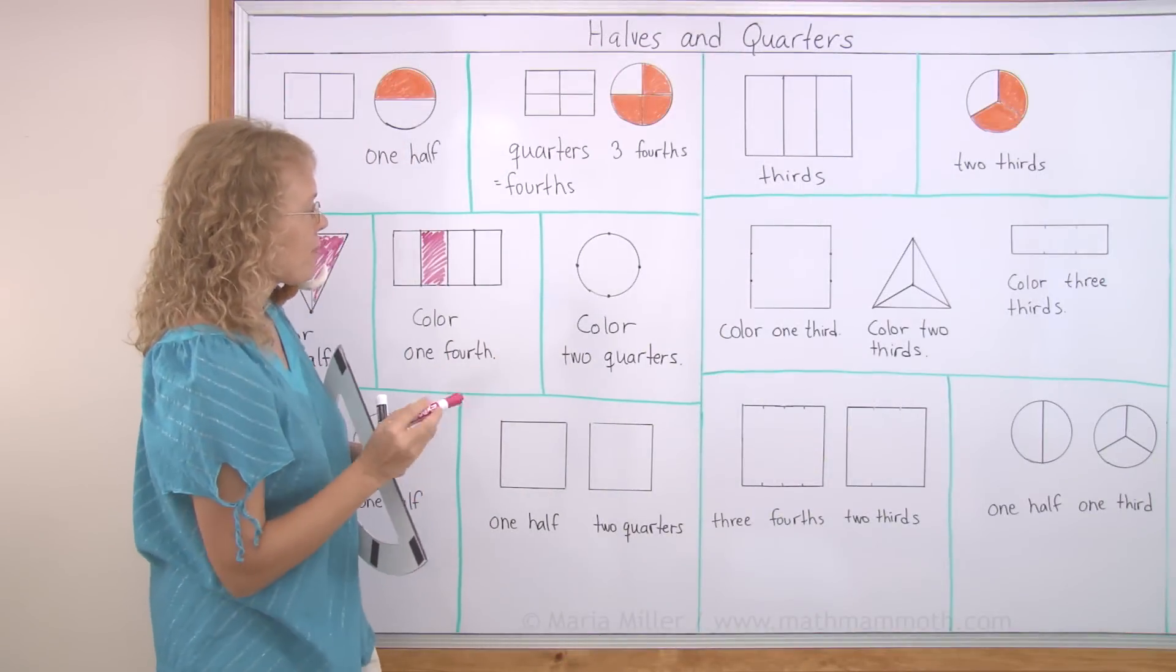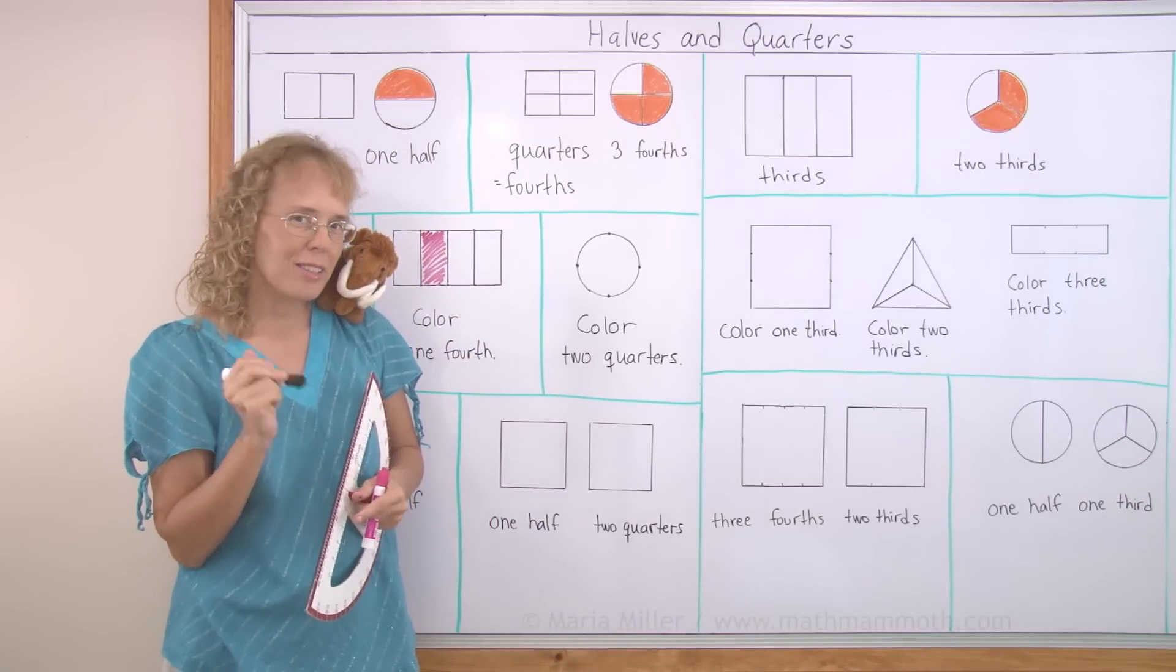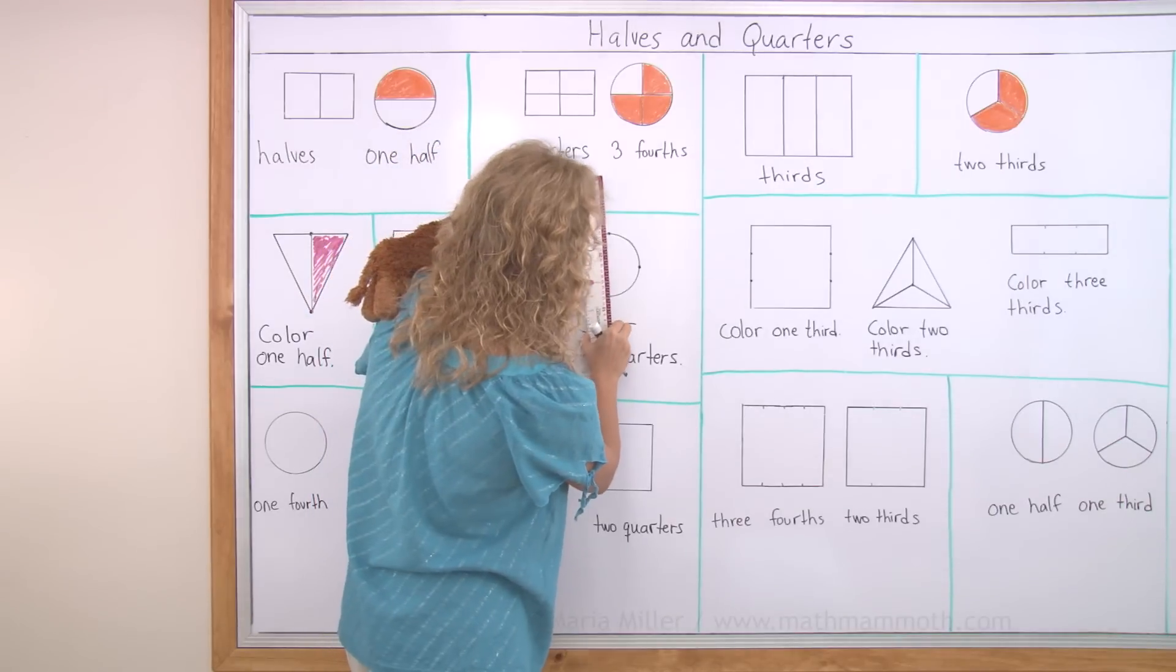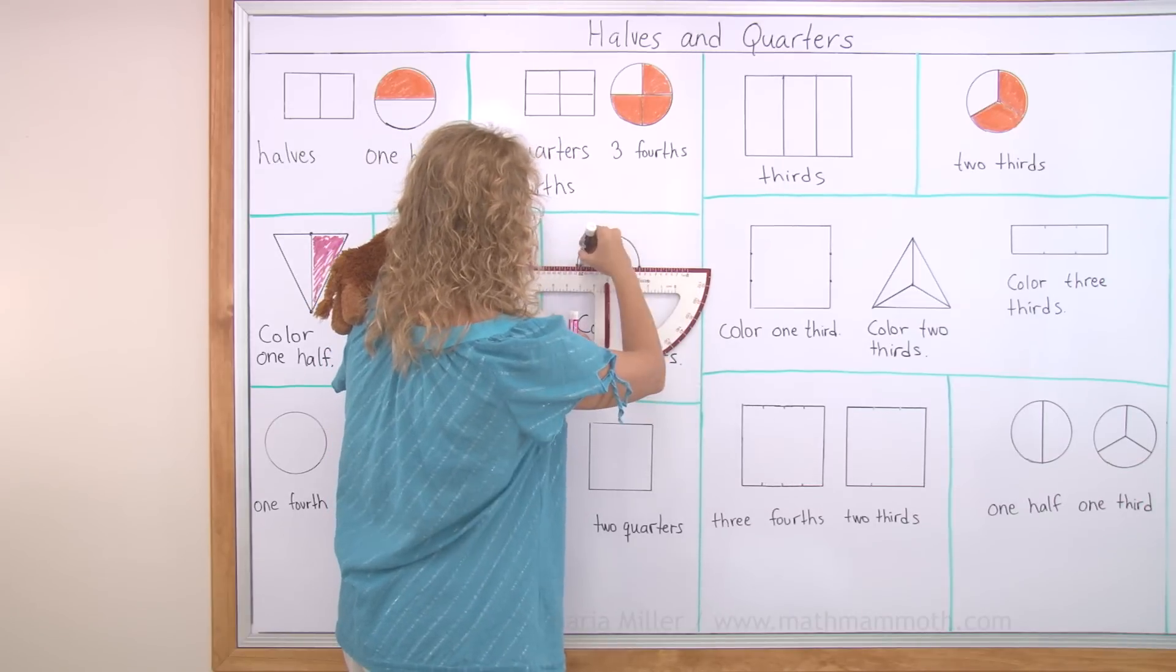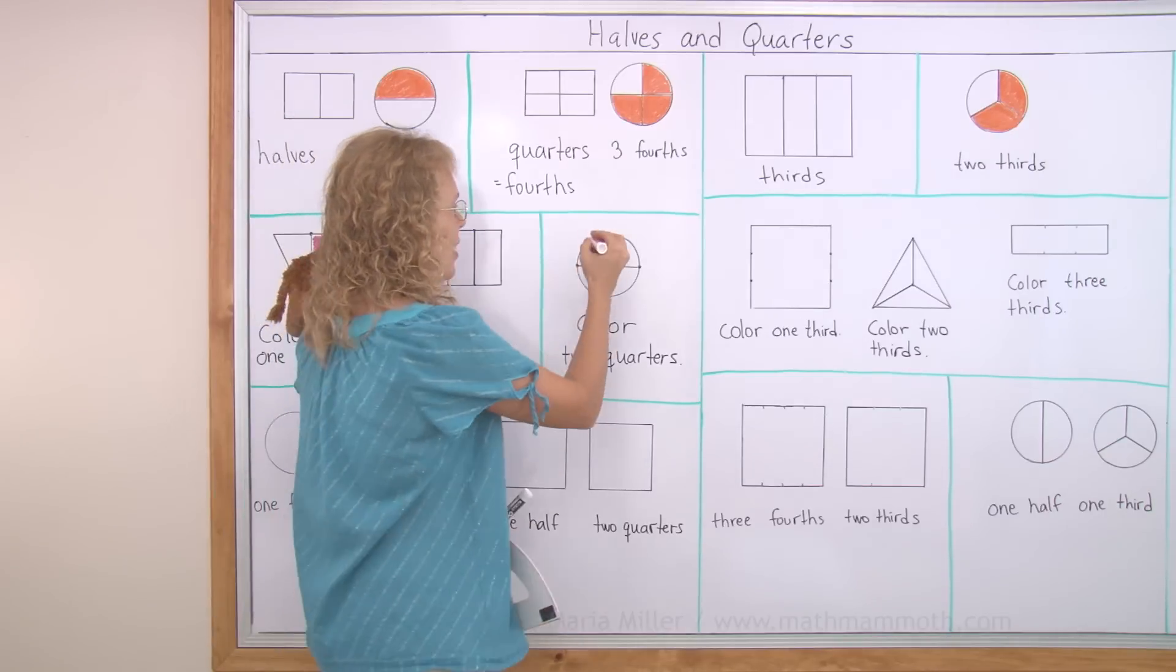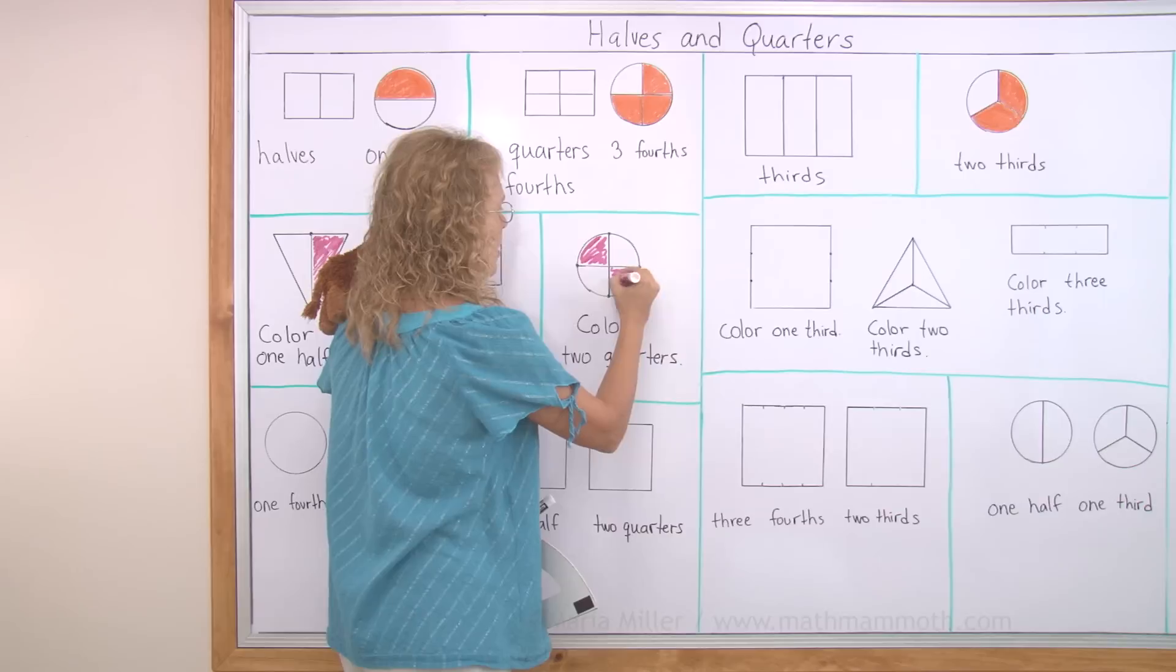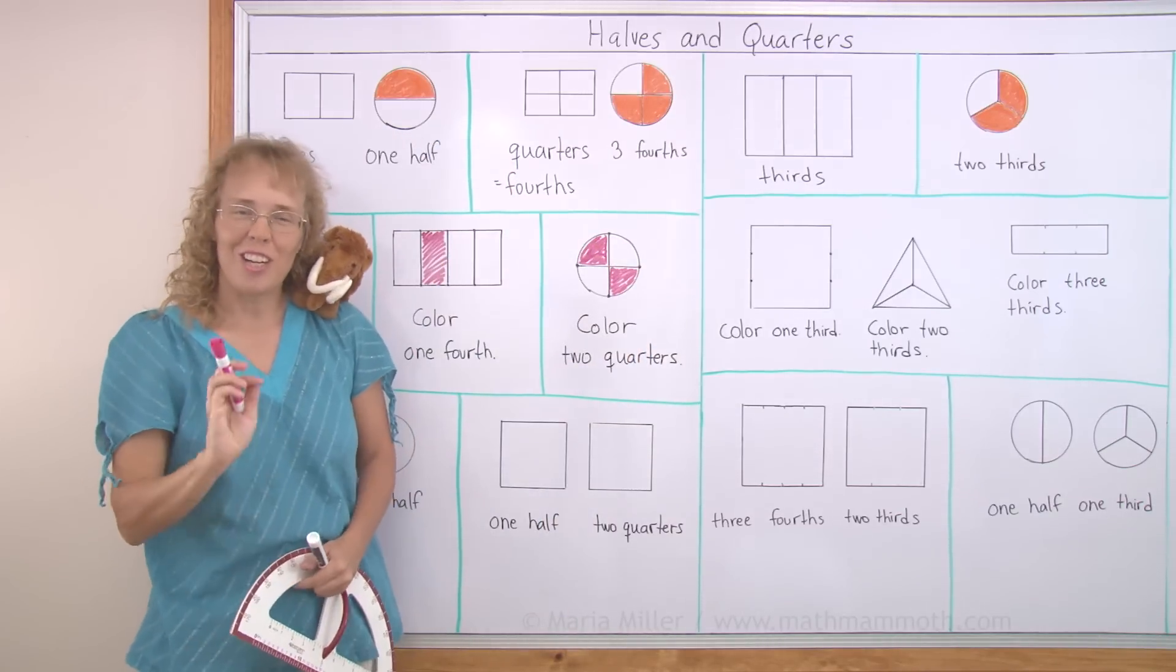Color two quarters. So now I need to first divide it into how many parts? Well, the dots give you a clue. Four parts again. This way. And this way. Color two quarters or two fourths. Any two fourths. Let's say I color this and this. So fractions are fun. You know, you get to color a lot.